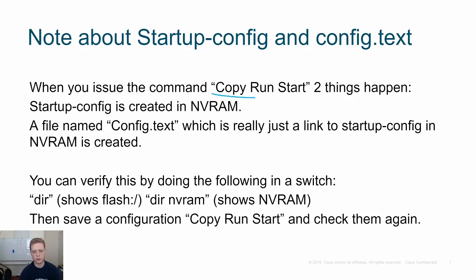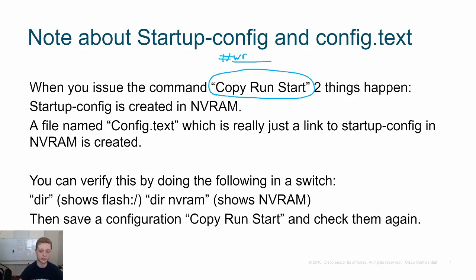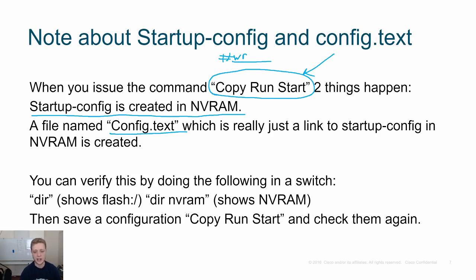When you hit the command 'copy run start' — or if you're old school like me, the 'WR' command, which you're not supposed to use on the test, but in the real world WR works great — two things happen: the startup config is going to be created or overwritten, and there's going to be a file named config.txt, which is really just a link to the startup config in NVRAM.